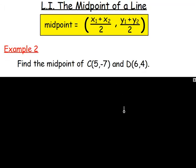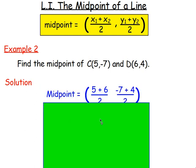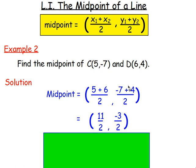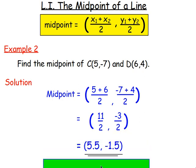Example two: find the midpoint of (5, negative 7) and (6, 4). Using the same formula — add the x's and halve them, then add the y's and halve them. 5 add 6 gives you 11; negative 7 add 4 gives you negative 3. Still divide each by two. 11 divided by 2 — you can leave it as 11 over 2, or as the decimal 5.5. Negative 3 over 2 gives you negative 1.5. So the midpoint is (5.5, negative 1.5).